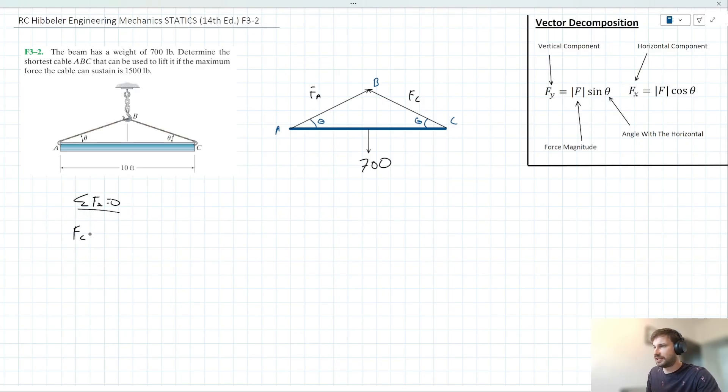We could say, acting to the left, we've got the horizontal component of FC, and acting to the right, the horizontal component of FA, but the cos thetas cancel, so all we have is FC is equal to FA. That's a nice place to be.